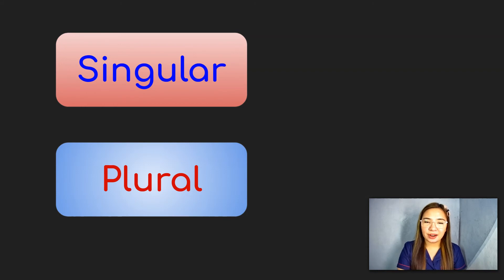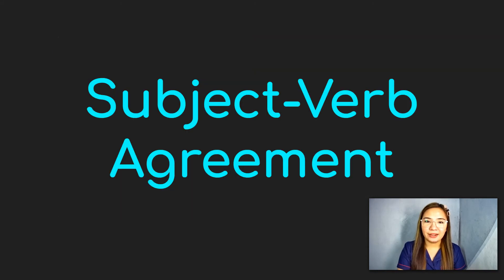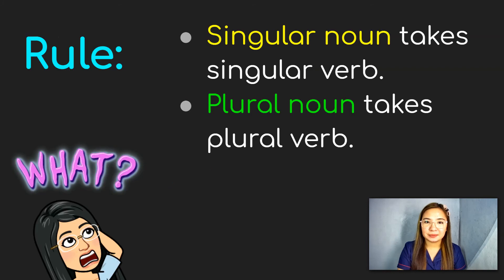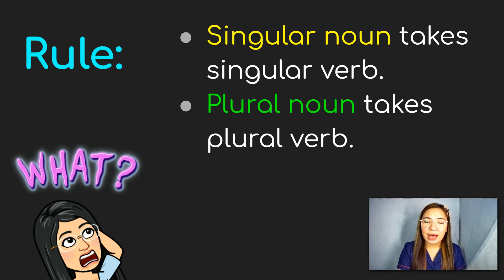For today we are going to talk about subject and verb agreement. The rule is that if we have a singular noun, we must have a singular verb, and if we have a plural noun, we must have a plural verb.